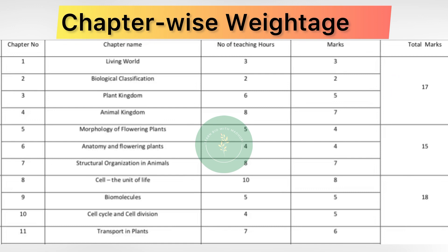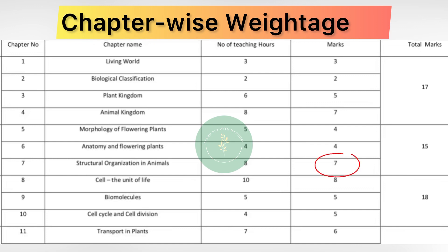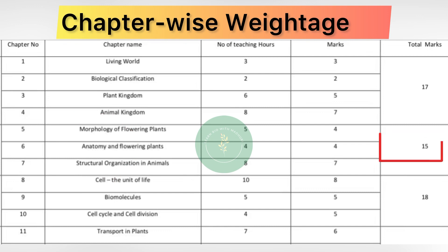Moving on to chapter number 5, Morphology of Flowering Plants — marks allotted here is 4 marks. Chapter number 6, Anatomy of Flowering Plants — marks allotted here is 4 marks. Chapter number 7, Structural Organization in Animals — marks allotted here is 7 marks. So totally from unit 2, the marks allotted in the question paper will be 15 marks.